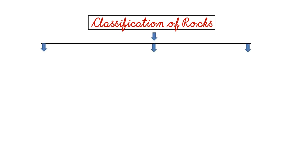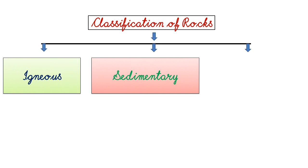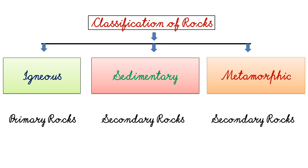Rocks are classified into three categories on the basis of their origin and mode of formation: igneous rocks, sedimentary rocks, and metamorphic rocks. Igneous rock is also called primary rock. Sedimentary and metamorphic rocks are also called secondary rocks. Metamorphic rocks are formed due to heat and pressure.